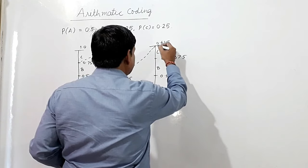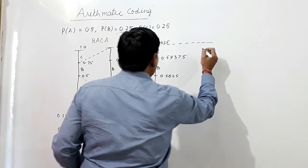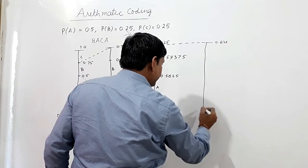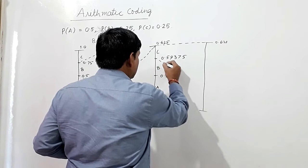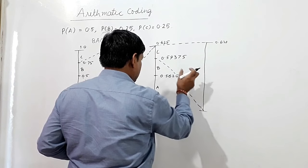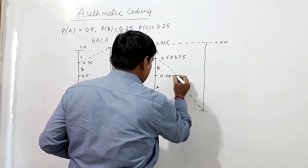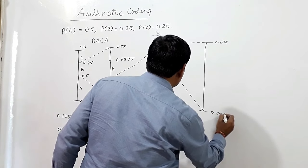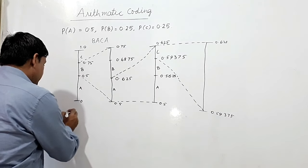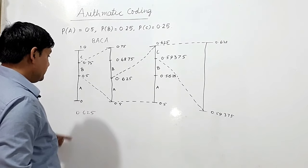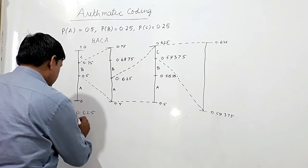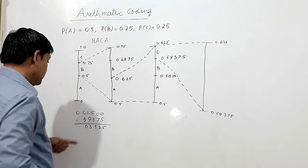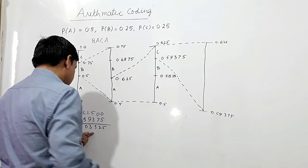For the third symbol C, I take C's interval. The upper limit is 0.625 and the lower limit is 0.59375. Subtracting, the width of C's interval is 0.625 minus 0.59375, which equals 0.03125.